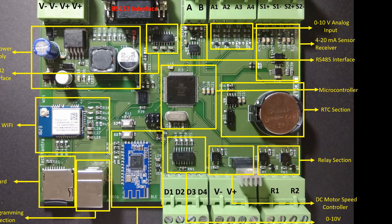The next section is the RTC section, and with the help of this section we are going to get all the RTC related parameters. RTC is basically real time clock. So we are going to get time, date, and day parameters from this section.